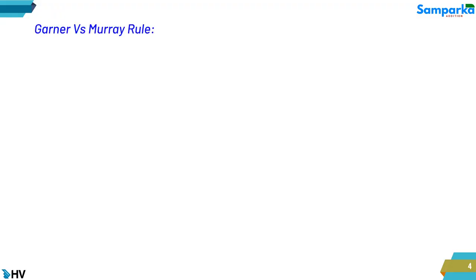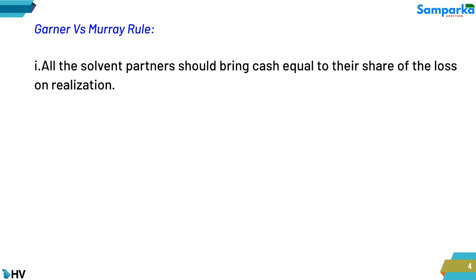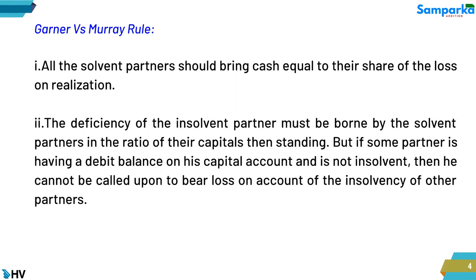Garner vs. Murray Rule: 1. All the solvent partners should bring cash equal to their share of the loss on realization. 2. The deficiency of the insolvent partner must be borne by the solvent partners in the ratio of their capital standing. But if some partner is having a debit balance on his capital account and is not insolvent, then he cannot be called upon to bear loss on account of the insolvency of other partners.